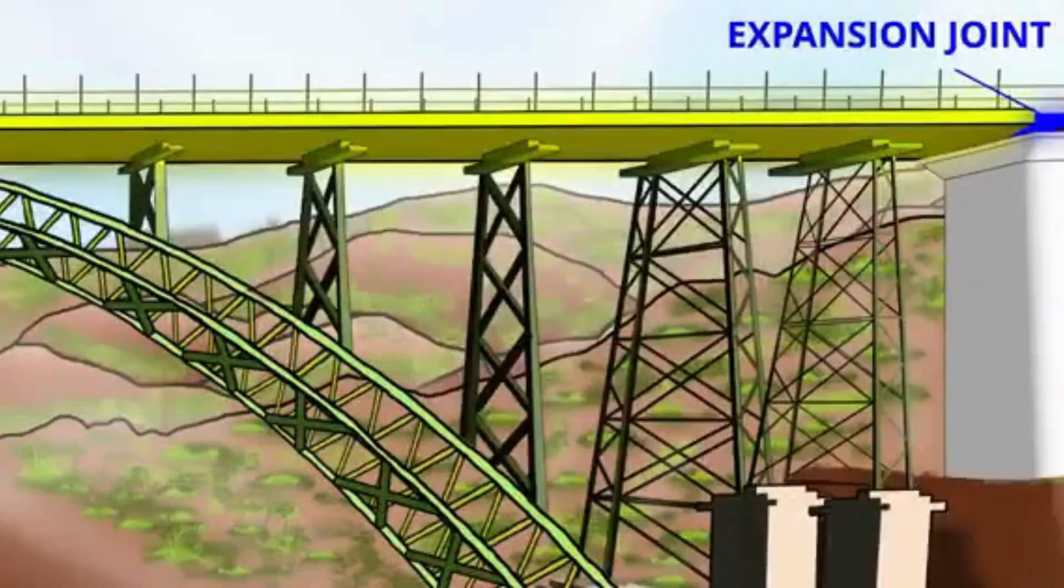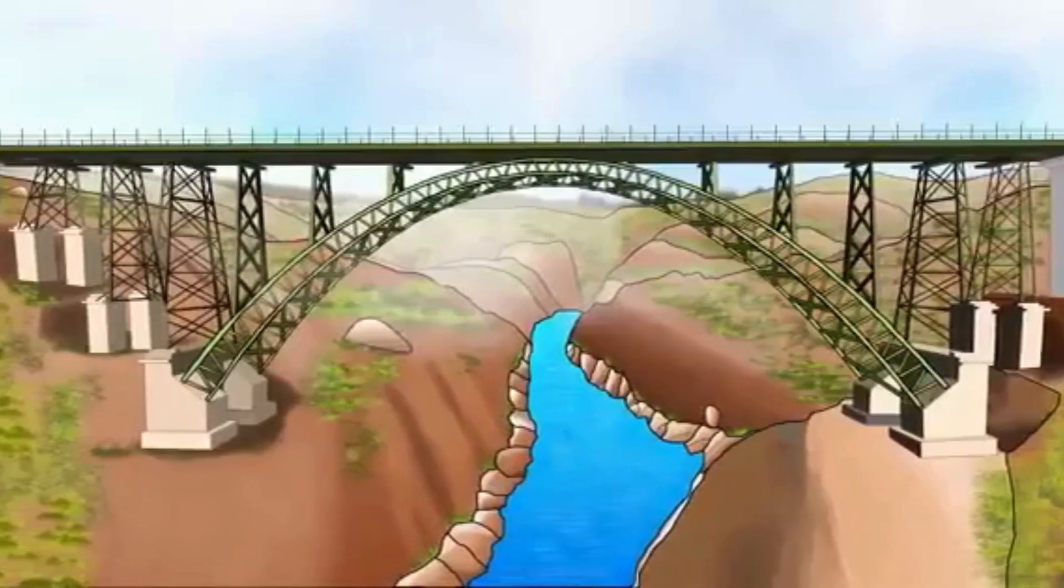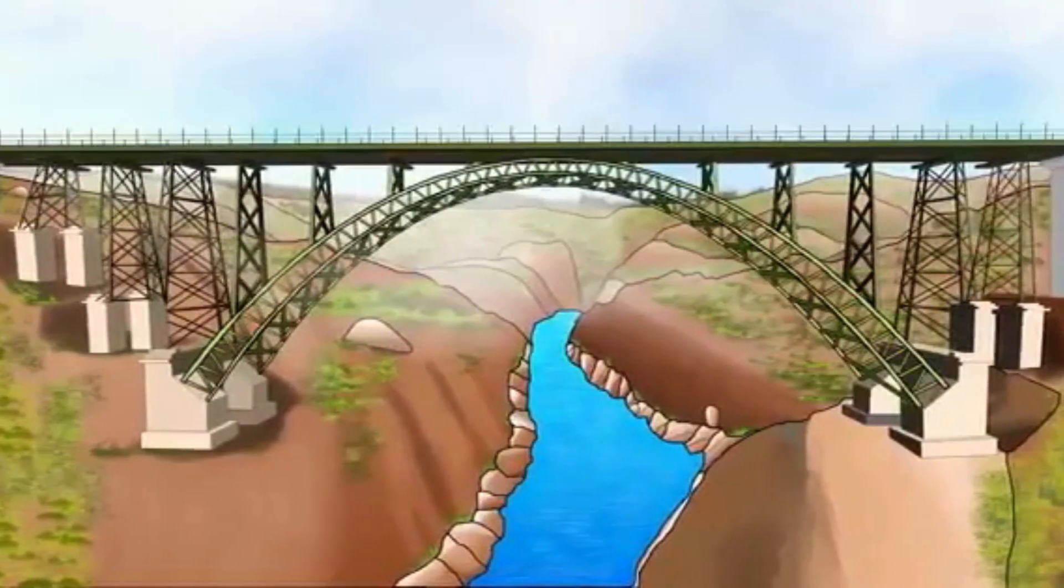The bridge is separated into three pieces with the help of these expansion joints. In short, the rail deck of the Chenab Bridge is not fixed to any structure from the ground. It's just floating on all these bearings.